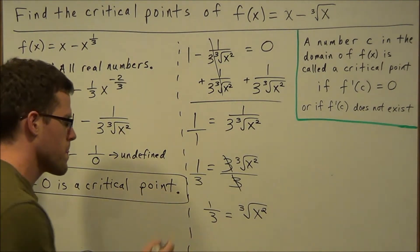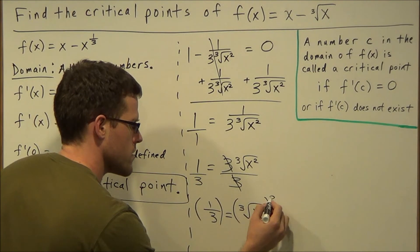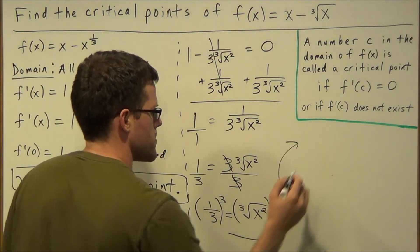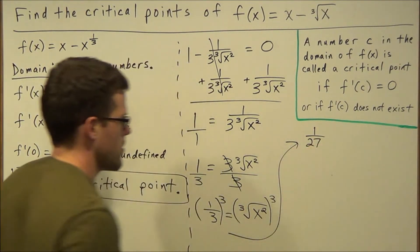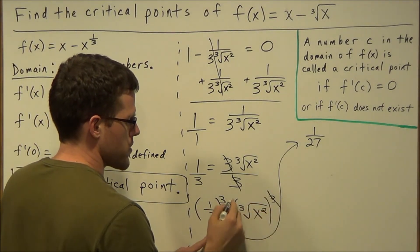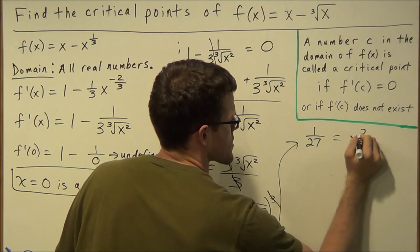We'll have 1 third equals the cube root of x to the second power. So what we'll do next is we're going to raise both sides to the third power. When we rewrite this, we're going to have 1 over 27 on the left hand side. On the right hand side, the third power and the cube root are going to cancel. So we have 1 over 27 equals x to the second.